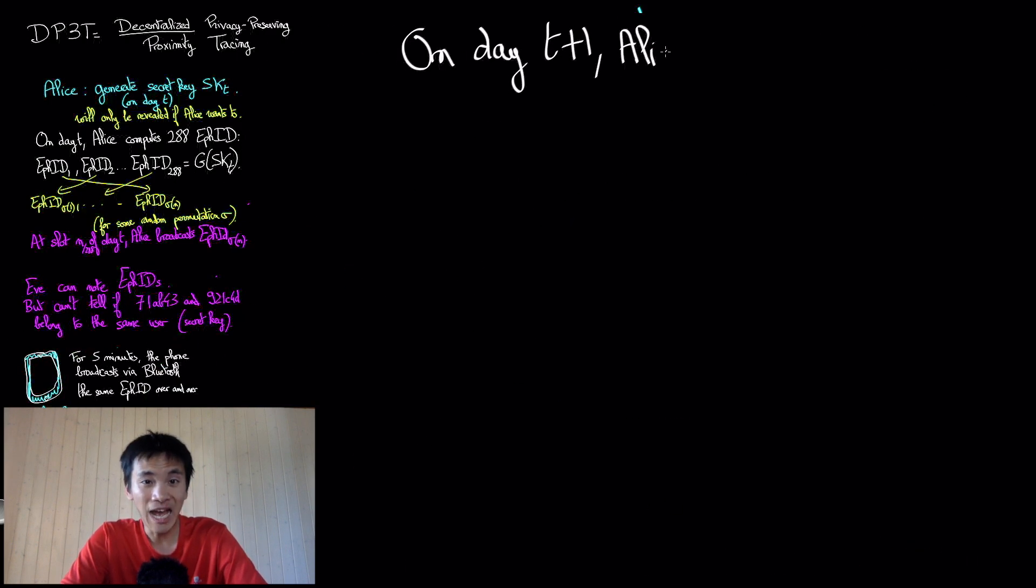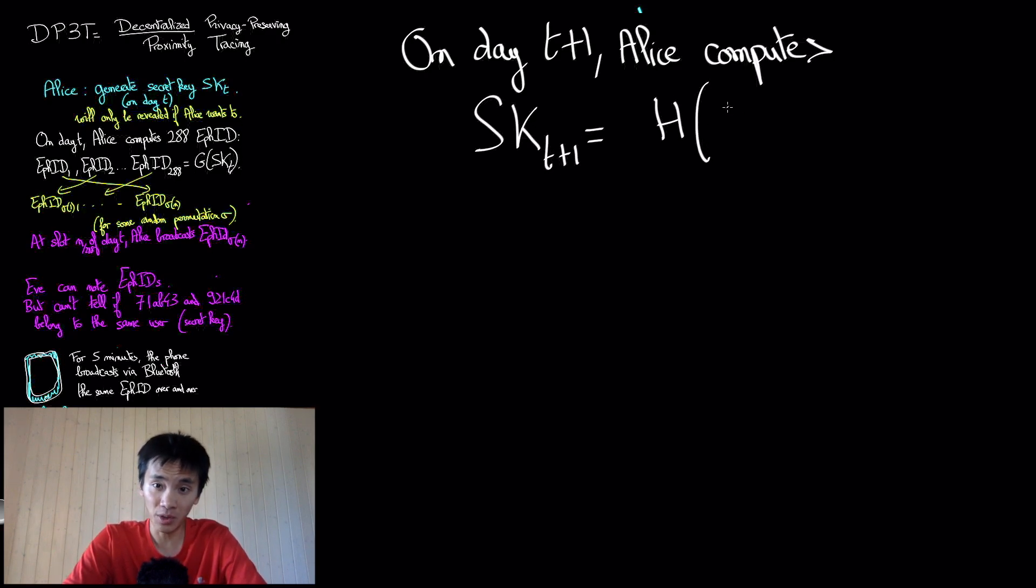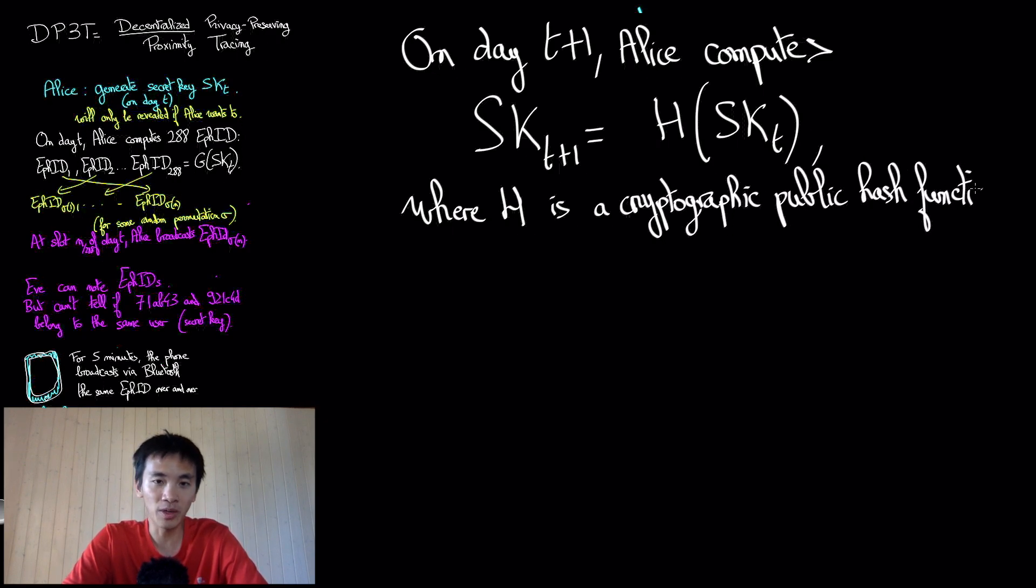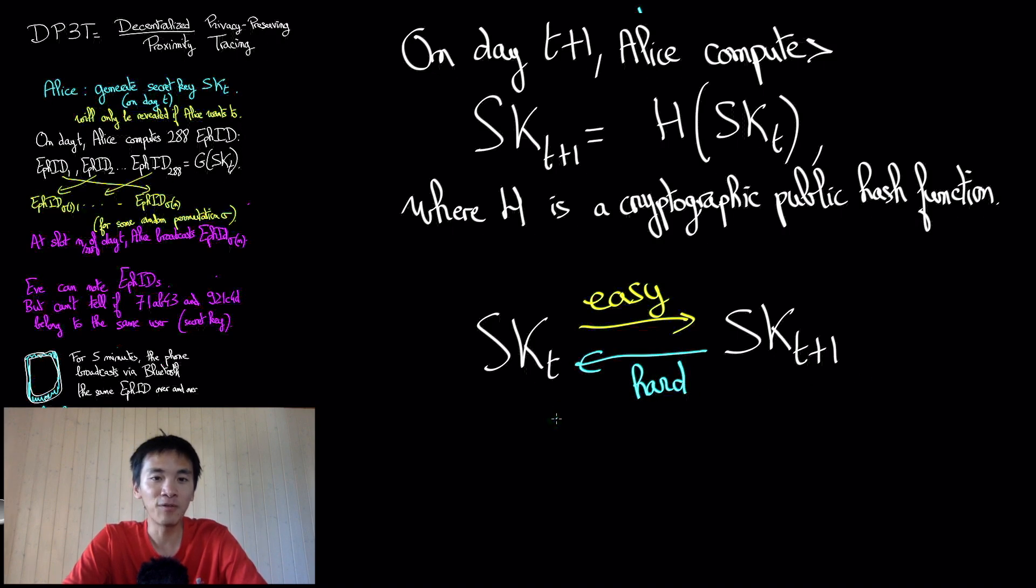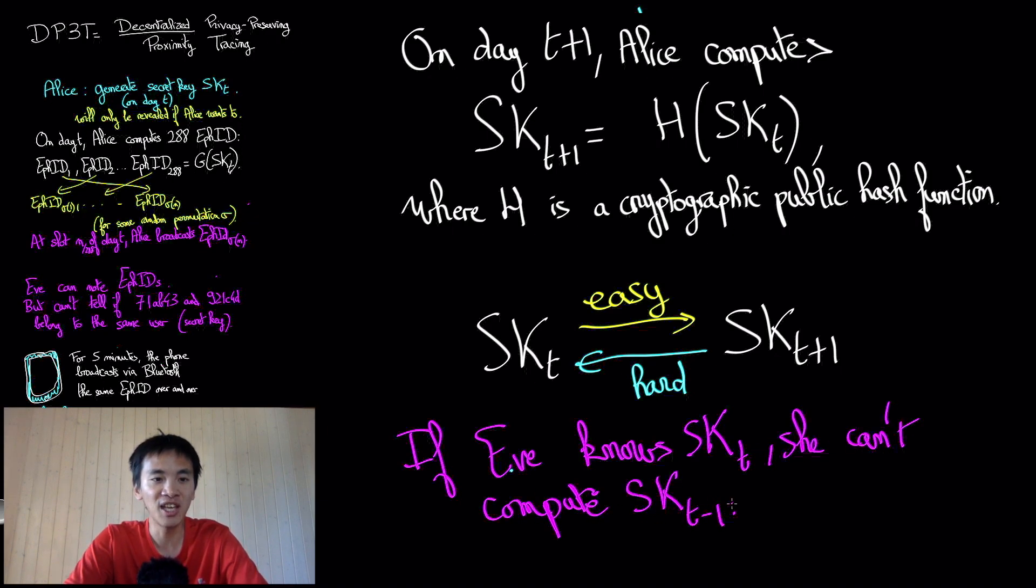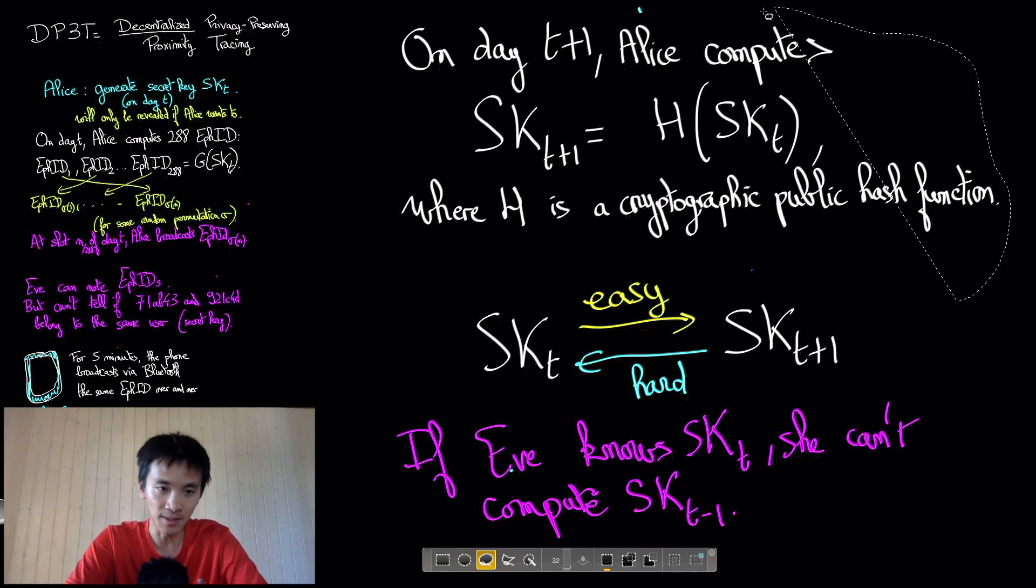The next day, T plus 1, Alice will compute a new secret key SKT plus 1 using a public cryptographic hash function H. She will define SK of T plus 1 equals to H of SKT. The fact that the hash function is public allows any other user who knows SKT to compute Alice's secret key after date T. But it will prevent Eve from computing secret keys before date T. This is because the hash function H is a one-way function. It is easy to compute in one direction from SKT to SKT plus 1, but it is hard to compute in the opposite direction from SKT plus 1 to SKT.